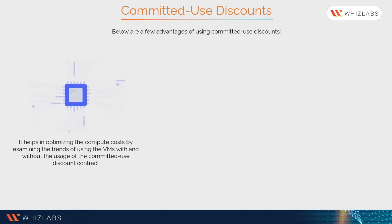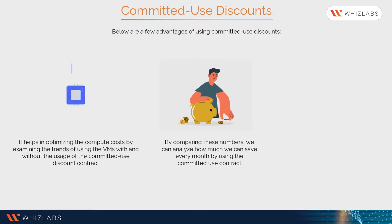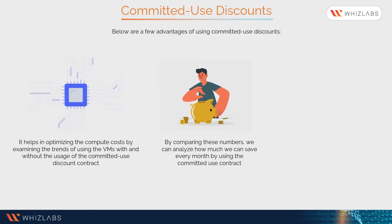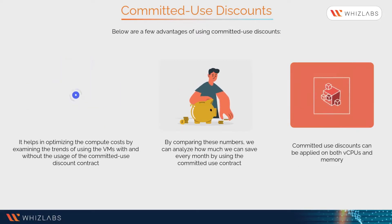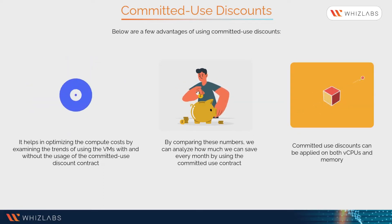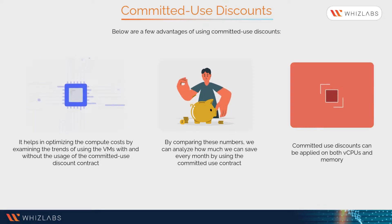Committed use discounts help optimize compute costs by examining trends of using VMs with and without a committed use discount contract. By comparing these numbers, we can analyze how much we can save every month. Committed use discounts can be applied to both vCPUs and memory independently of one another.